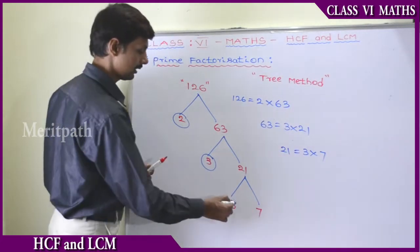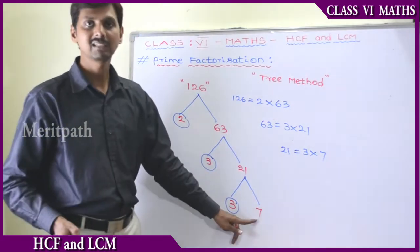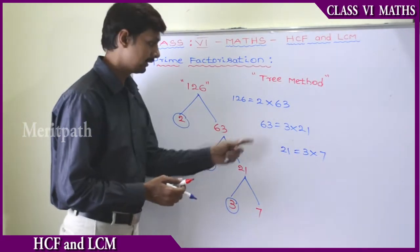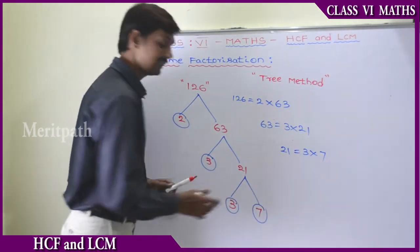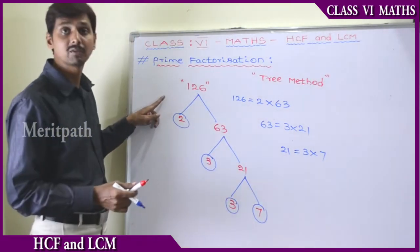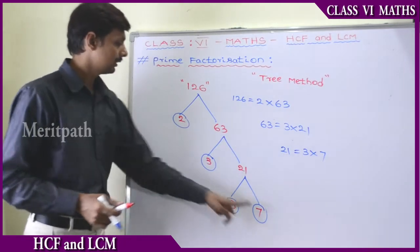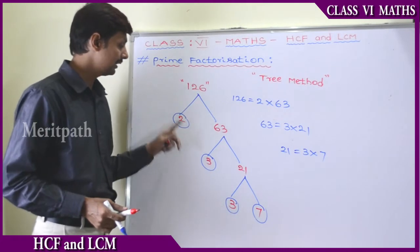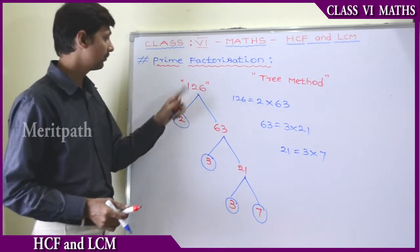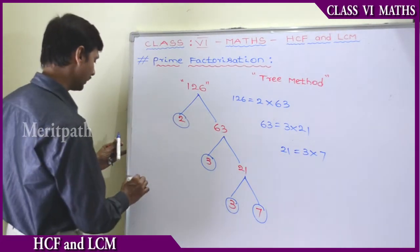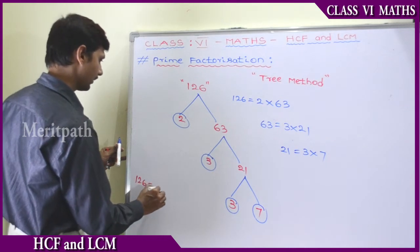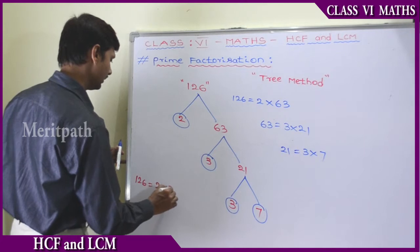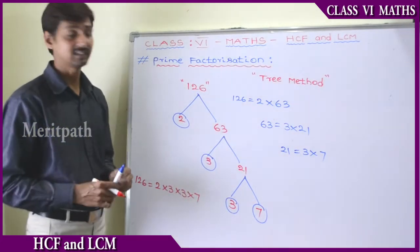7 is a prime number itself, so we cannot factor it further. Let us see the factors we got here: 3, 7, 3, and 2. These are the prime factors for 126. So 126 equals 2 into 3 into 3 into 7. These are the prime factors for 126.